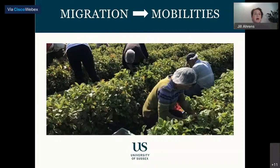Another example of post-migration mobilities is what is termed the 'secondary movements' of asylum seekers — irregularized mobilities that take place following immigration to a first safe country. This represents a policy-oriented conception of post-migration mobilities.